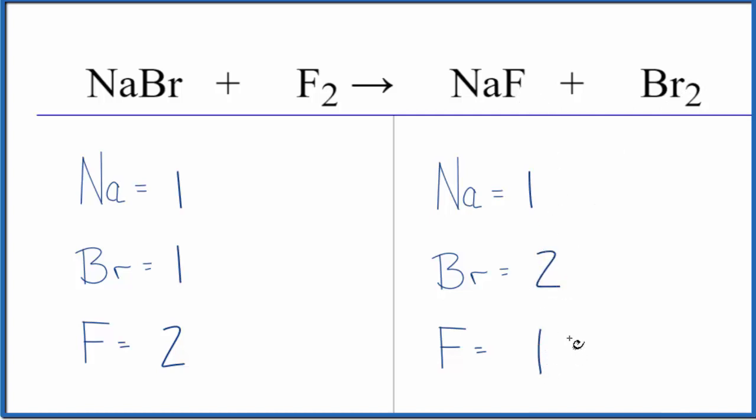Let's see, why don't we start by putting a two in front of the sodium bromide. So this two applies to everything. We have one times two, so that gives us two sodium atoms, and one times two, that'll give us two bromine atoms. So those are balanced.